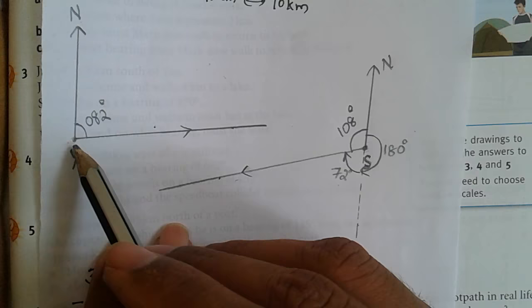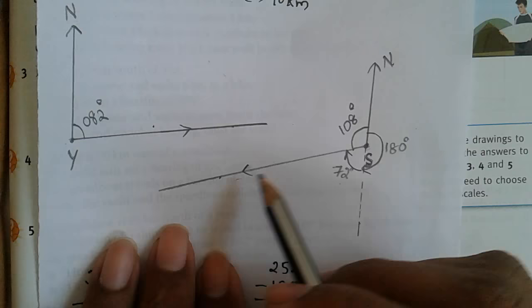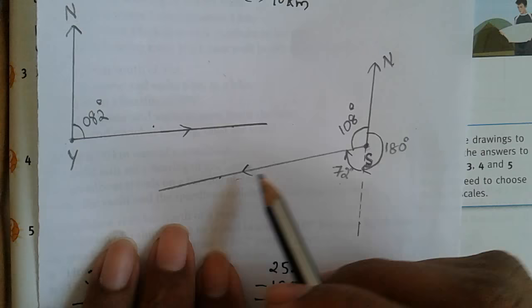Now from the diagram we can clearly see that yacht and speedboat both are traveling in different paths, hence they do not collide with each other.